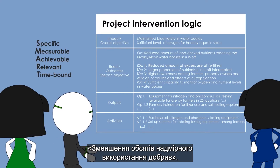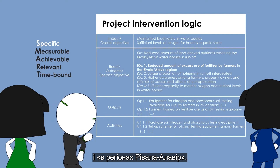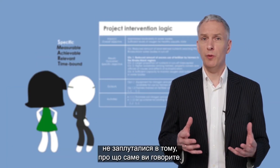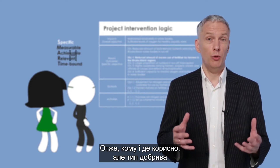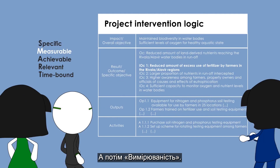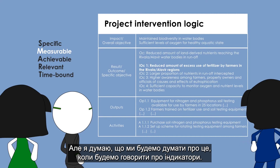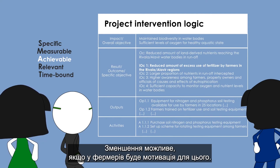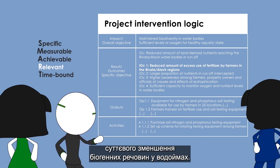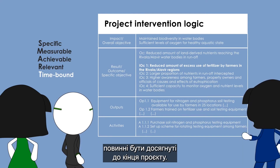Taking the result 'reduced amount of excess use of fertilizer' as an example: Is it specific enough? They could add 'by farmers in the Rivala-Alaver regions.' The type of fertilizer may not matter as much, but assessors should not be confused about what exactly is meant, so who and where is useful. Measurability seems fine — it can be measured how much is used, though indicators will be discussed later. Achievability is also fine, as a reduction is possible if farmers have the motivation. Relevance is strong, since without this it would be hard to achieve significant reduction of nutrients in water bodies. And it is time-bound, as all results must be achieved by the end of the project.